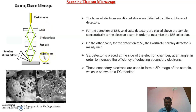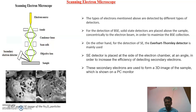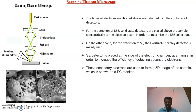The detectors for the backscattered electrons are kept above the sample, and detectors for the secondary electrons are kept at the sideways of the path of the electron beam. These respective detectors collect the respective electrons, and these electrons give a perfect image of the surface of the material on a computer monitor. This is the working principle.